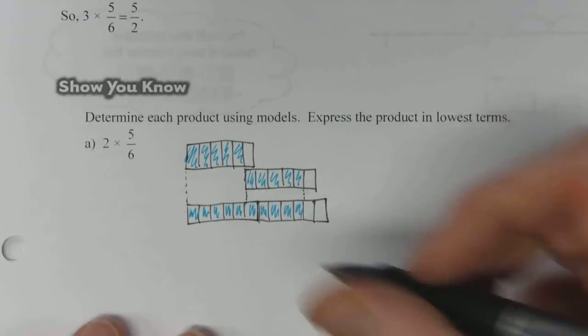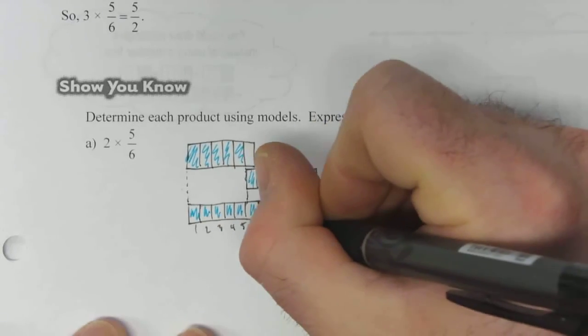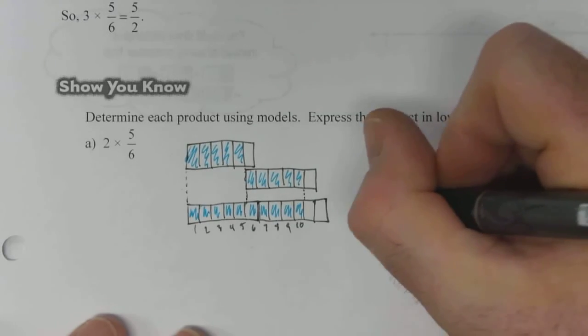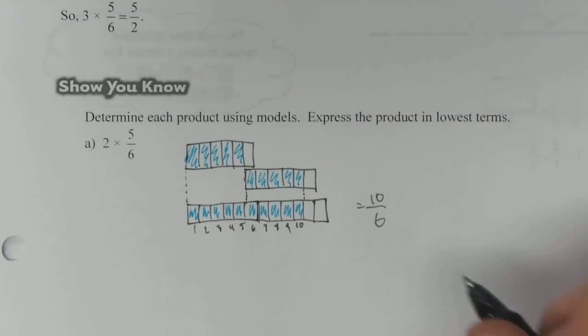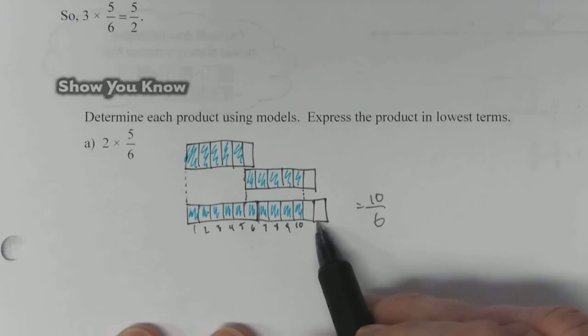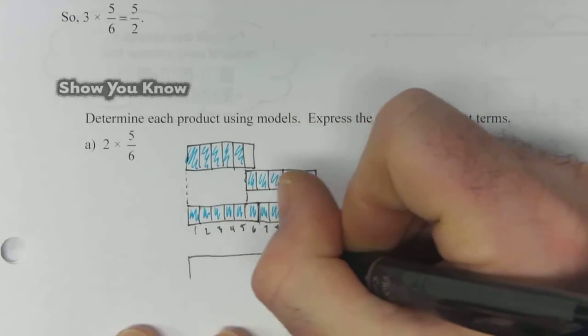And we have 1, 2, 3, 4, 5, 6, 7, 8, 9, 10, so it's equal to 10/6. But if we notice, this last partial strip, it's got 4 out of 6, or 2/3 shaded, so we can